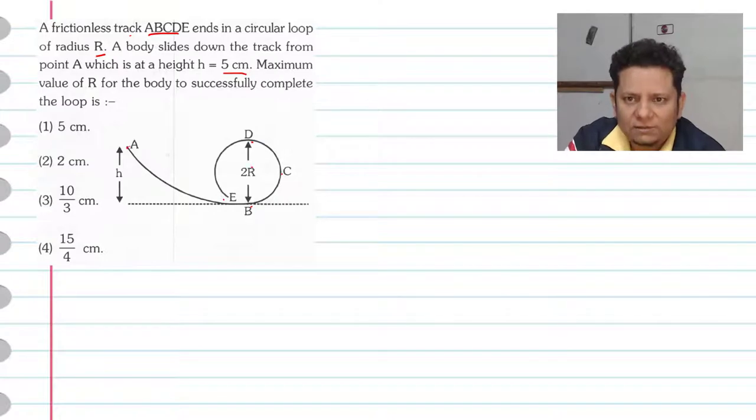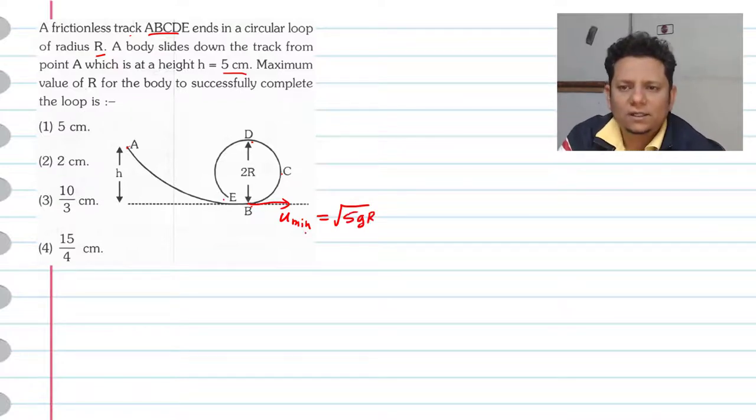Now, this is an easy question combining vertical circle motion plus work-power-energy. These two concepts apply here. We know that to complete the circular motion, the minimum velocity at point B should be equal to square root of 5gR. This is a vertical circle condition. Under root 5gR velocity is minimum.